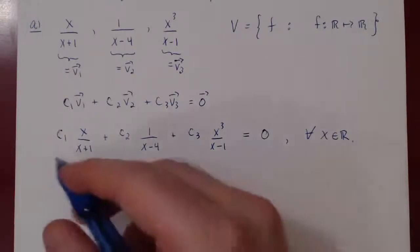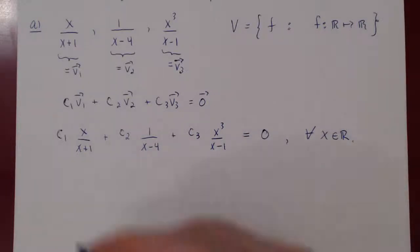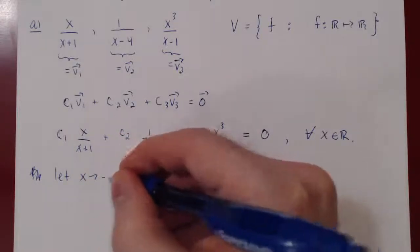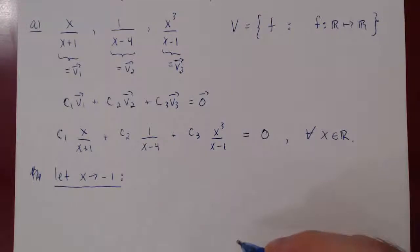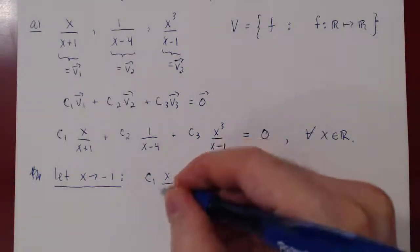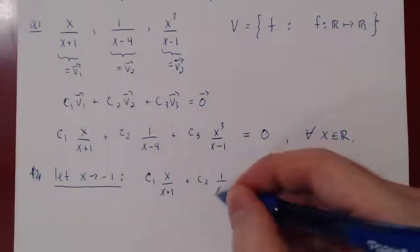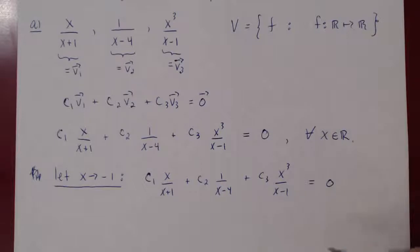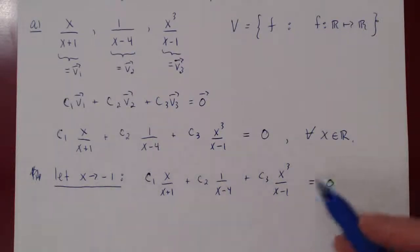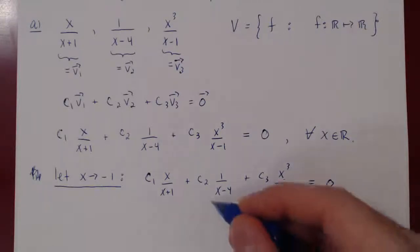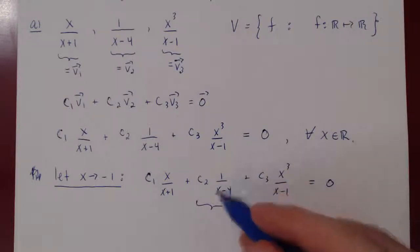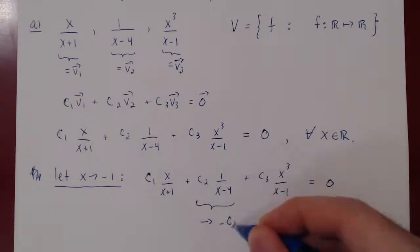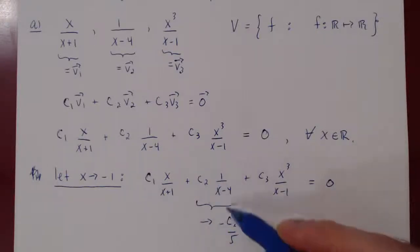Let's let x approach negative one in the linear combination: c1·(x/(x+1)) + c2·(1/(x−4)) + c3·(x³/(x−1)) = 0 for all x. As x approaches −1, the second term approaches 1/(−1−4) = −1/5, so it approaches −c2/5 — a fixed constant. The third term: x³ approaches −1, and (x−1) approaches −2, giving −1/(−2) = 1/2, so this term approaches c3/2 — also a fixed constant.